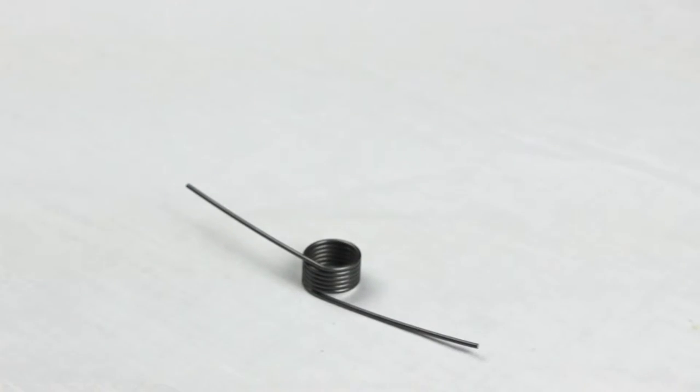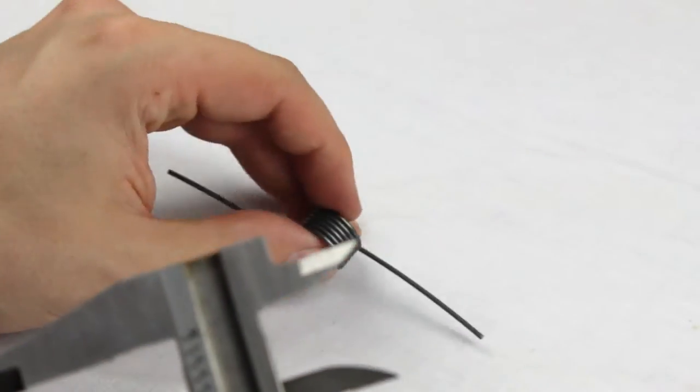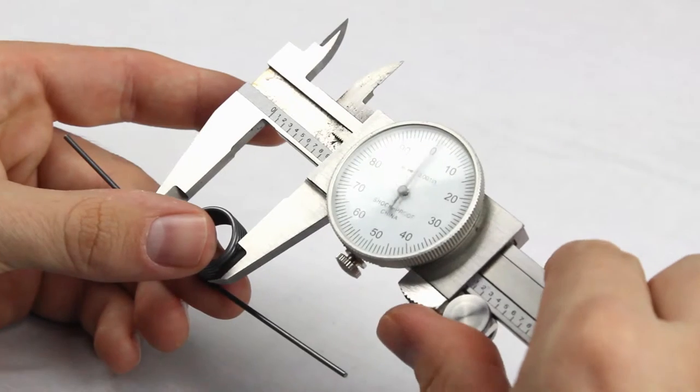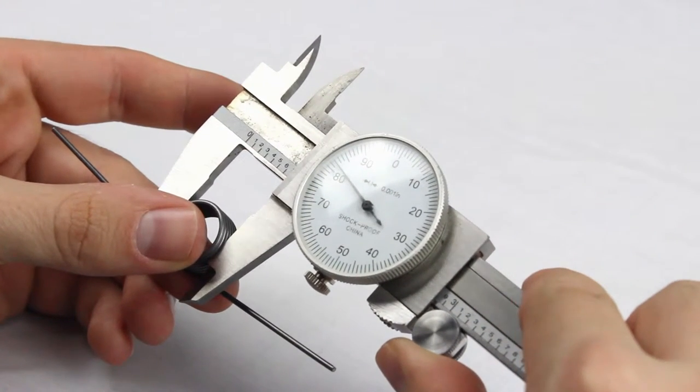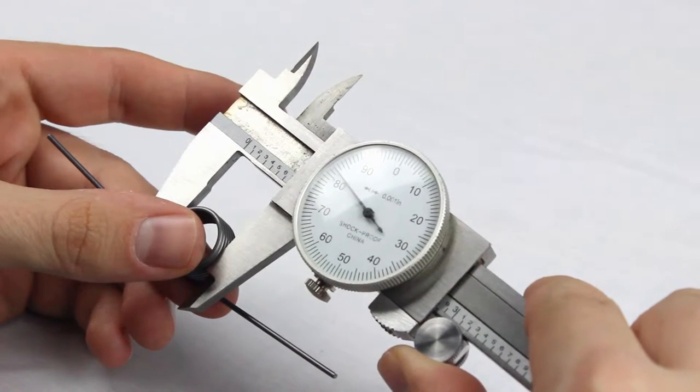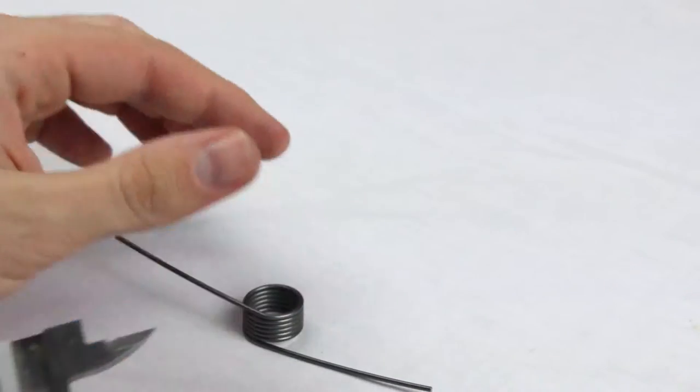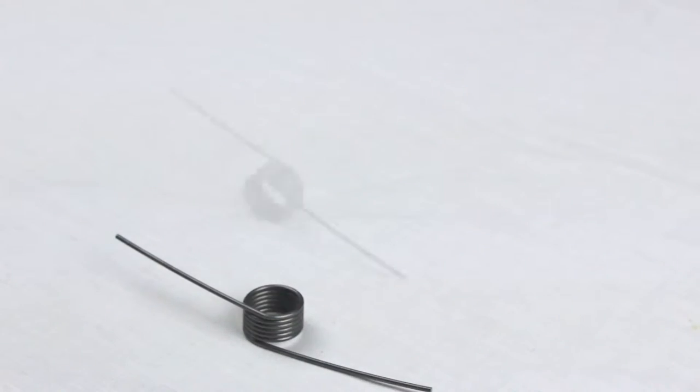Next, we'll measure outside diameter, commonly referred to as OD. For this spring, it is .682 inches. When possible, it is best to measure the outside diameter in the middle of the spring. The end coils tend to run larger.